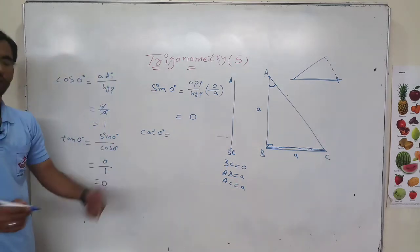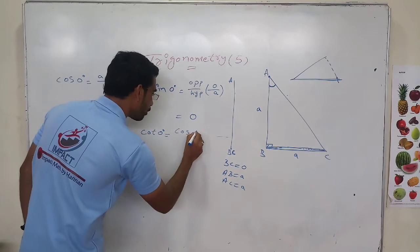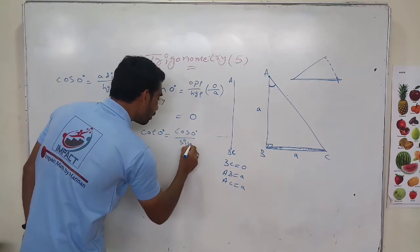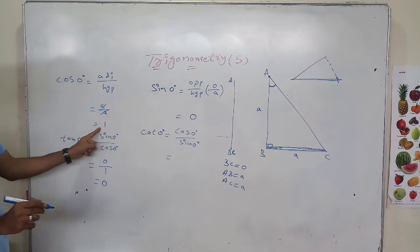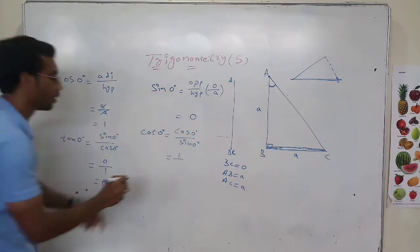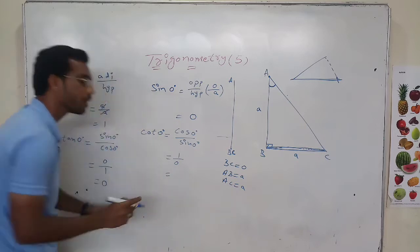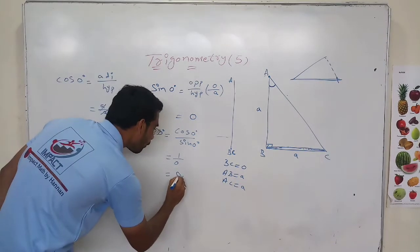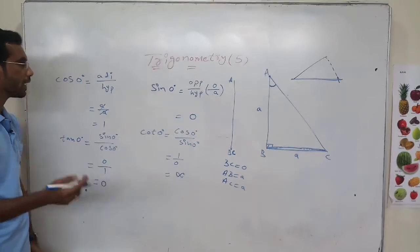Cot 0 degrees equals cos 0 degrees by sin 0 degrees. Cos 0 is 1 and sin 0 is 0. So 1 by 0 — anything divided by 0 is an undefined number; that number has not been defined.